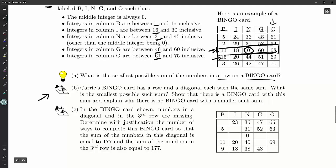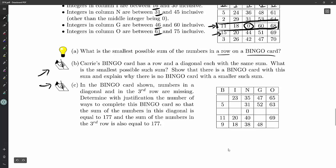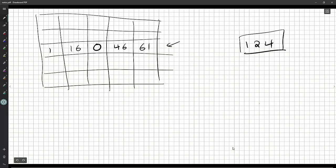Part B: Carrie's bingo card has a row and a diagonal, each with the same sum. What is the smallest possible such sum? Show that there is a bingo card with this sum, and explain why there is no bingo card with a smaller sum. Again, to use the smallest, I'm thinking we should really use this zero here. We can find a row and a diagonal that do that. It looks like they're going to use that same row and diagonal in part C. We obviously need something a little bit bigger than 124.